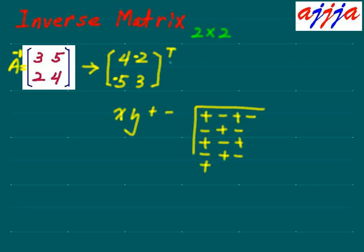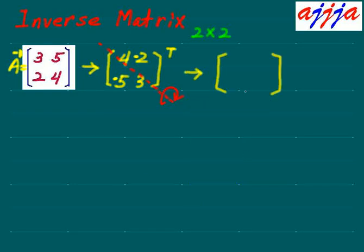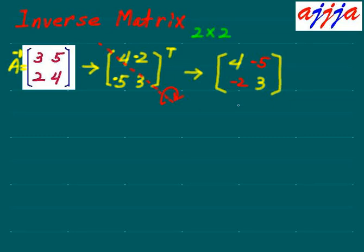The next step is to find the transpose. Transpose means you change the position. For this one it's very simple — you make one shaft like this, then you spin it 180 degrees. So four and three don't move at all — they stay there. But negative two and negative five exchange places, so this becomes negative five and this becomes negative two.